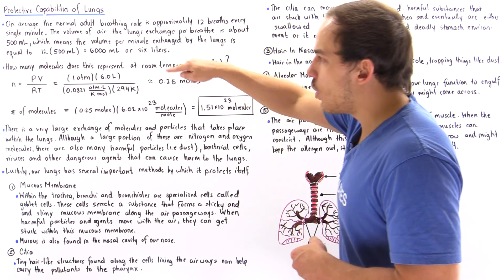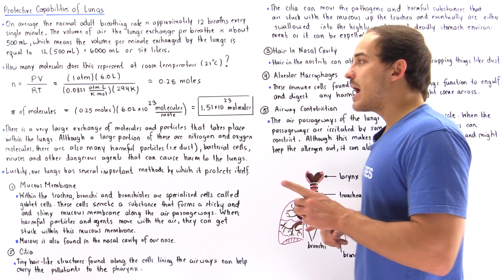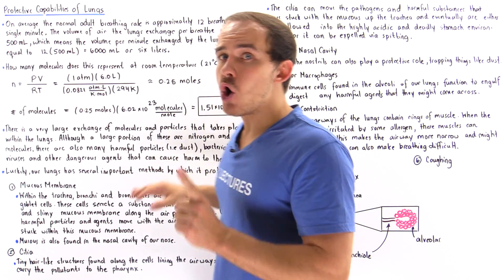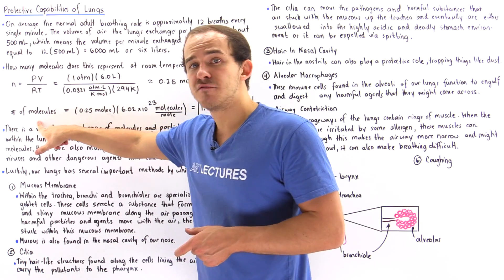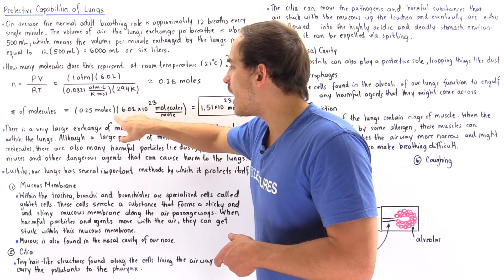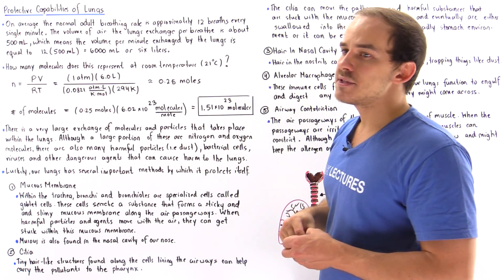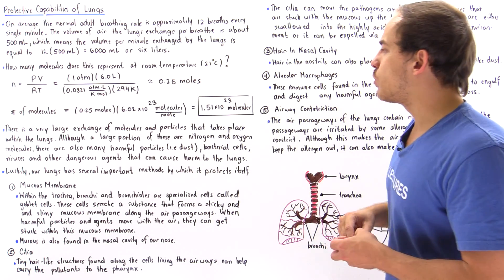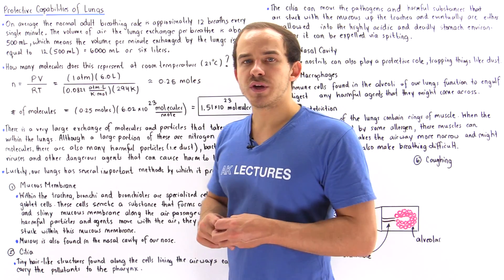If we multiply and divide, we get about 0.25 moles. This is the number of moles, and we know inside one mole we have Avogadro's number of molecules. To find the number of molecules, we take this many moles multiplied by Avogadro's number, 6.02 times 10 to the 23 molecules per mole. The moles cancel and we're left with about 1.51 times 10 to the 23 molecules.